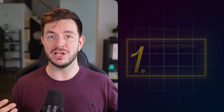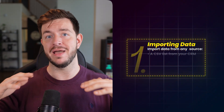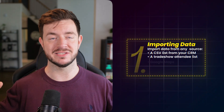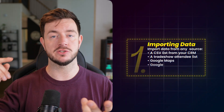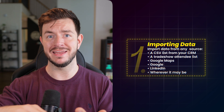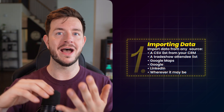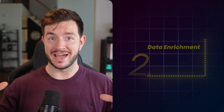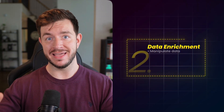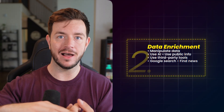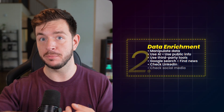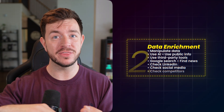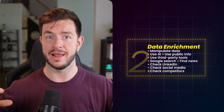To give you a brief overview of exactly what Clay is and the ways you can use it — it's essentially a spreadsheet. You import data from any number of sources: a CSV list, from your CRM, a trade show attendee list, Google Maps, Google, LinkedIn, wherever it may be. You can then add to that data and manipulate it in any way you want. So you can use AI, publicly available information, and third-party tools to enrich the data.